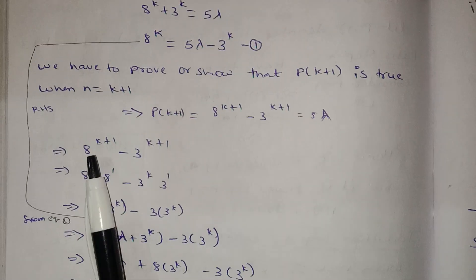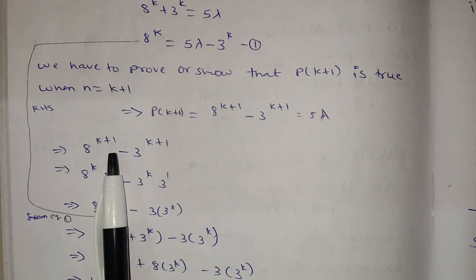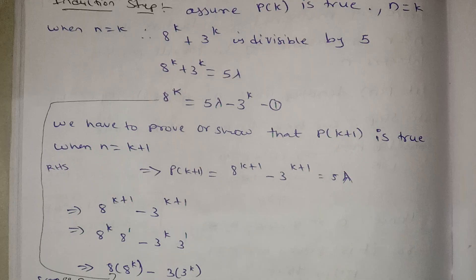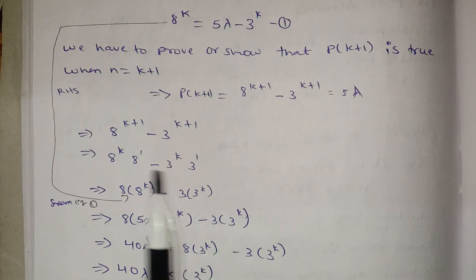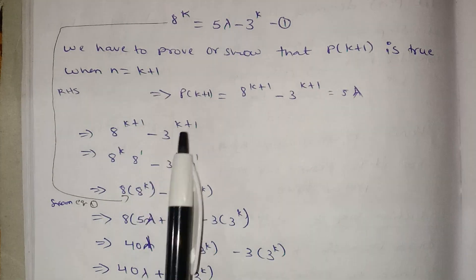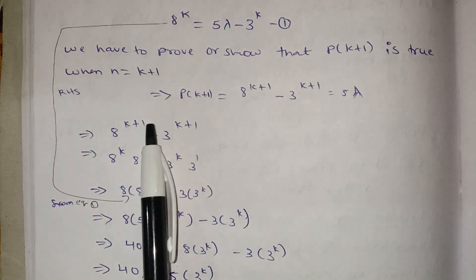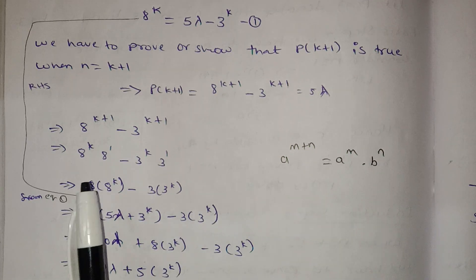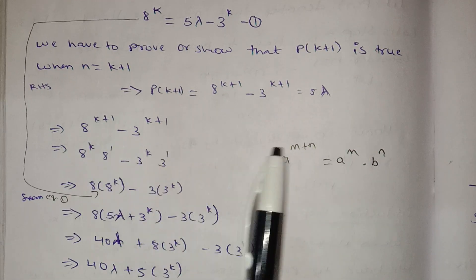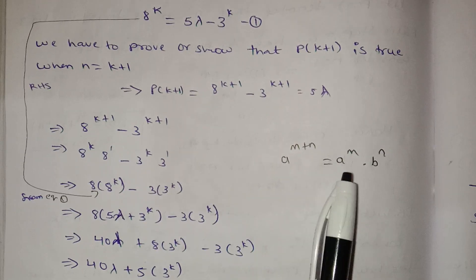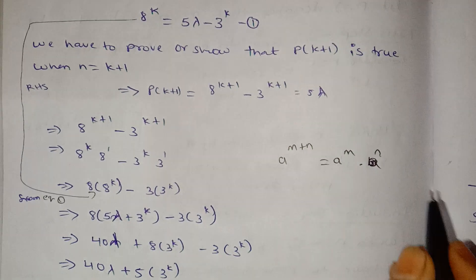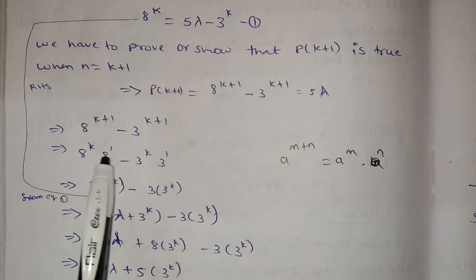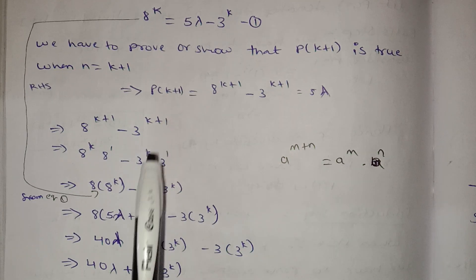P of k plus 1: we start with 8 power k plus 1 minus 3 power k plus 1. Using the formula a power m plus n equals a power m times a power n, this becomes 8 power k into 8 power 1 minus 3 power k into 3 power 1.